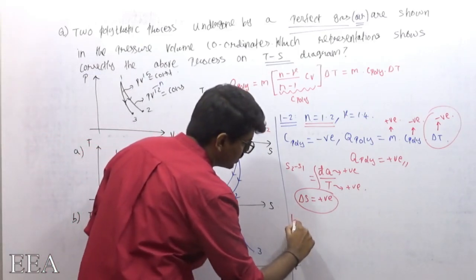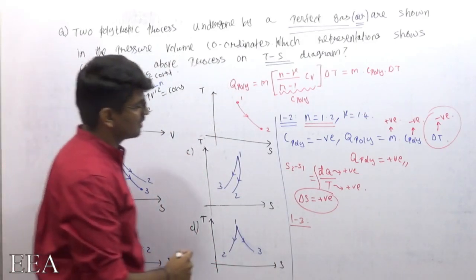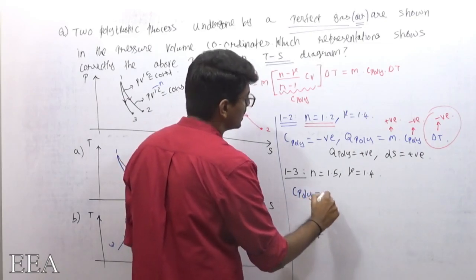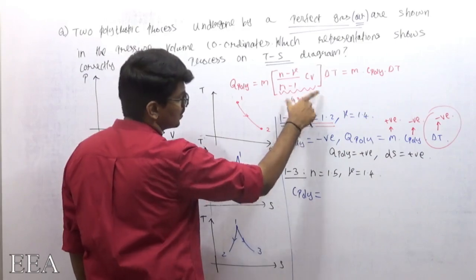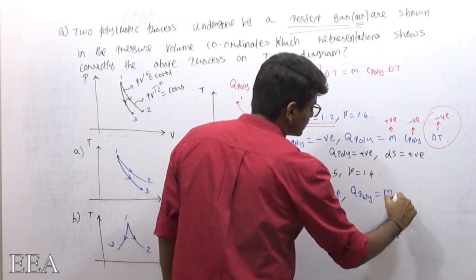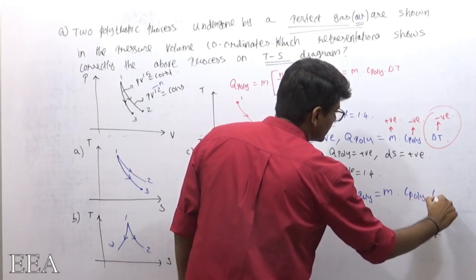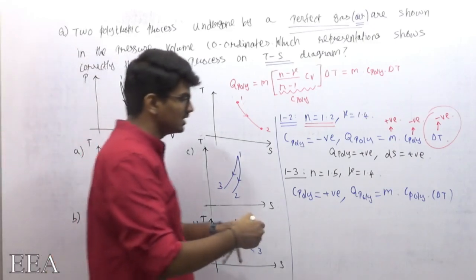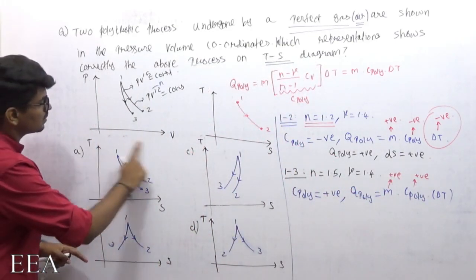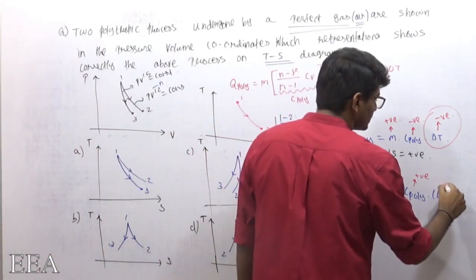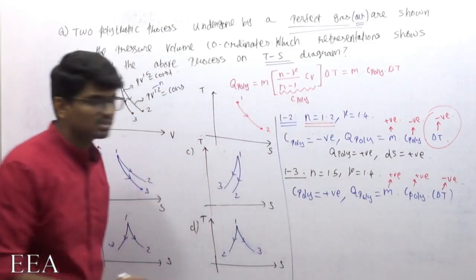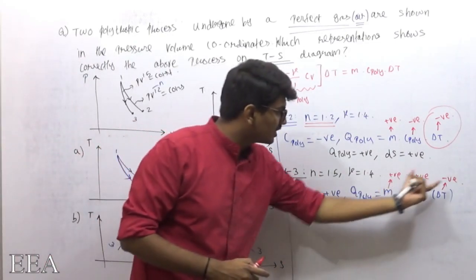Now for process 1 to 3: here n = 1.5 and gamma = 1.4. For c_poly, since n is greater than gamma, the numerator (n minus 1) is positive and the denominator term (n minus gamma) is also positive, so c_poly is positive. Again, volume is increasing so it is an expansion process — temperature is decreasing, so ΔT is negative.